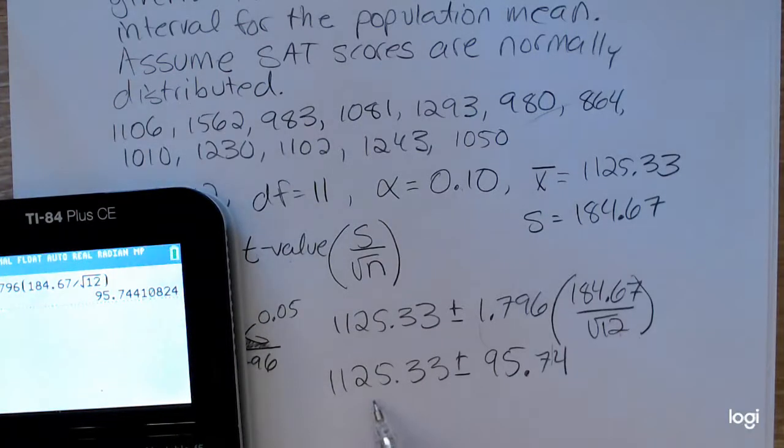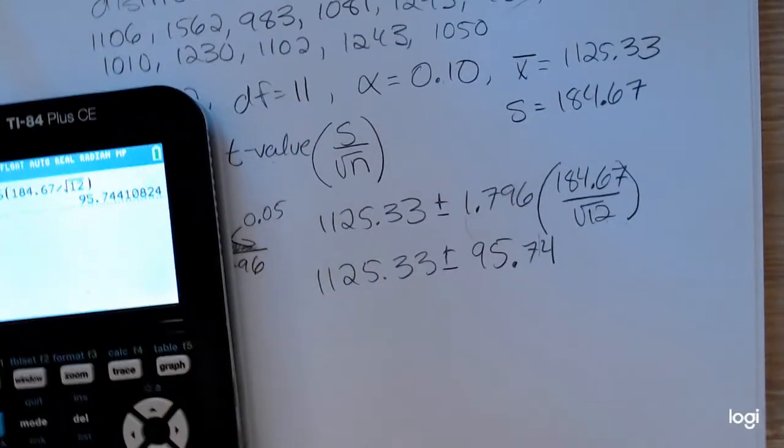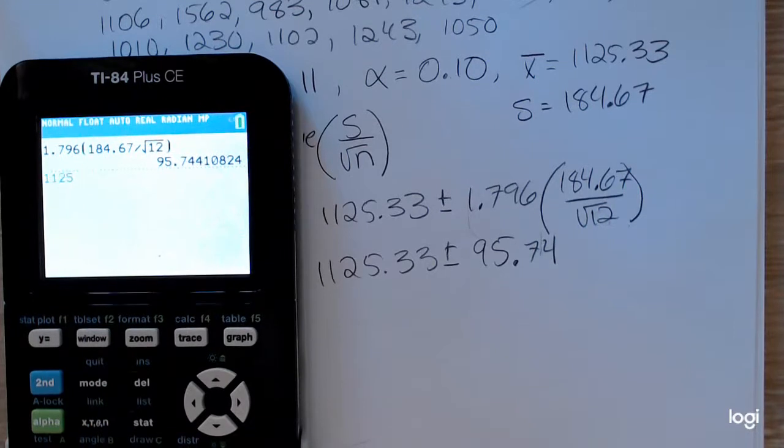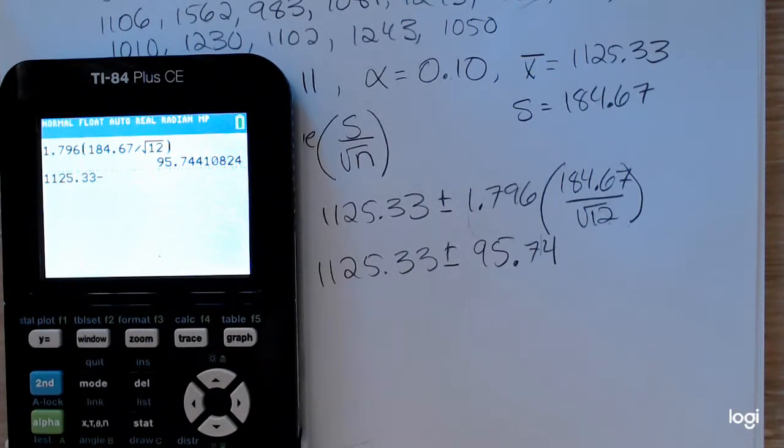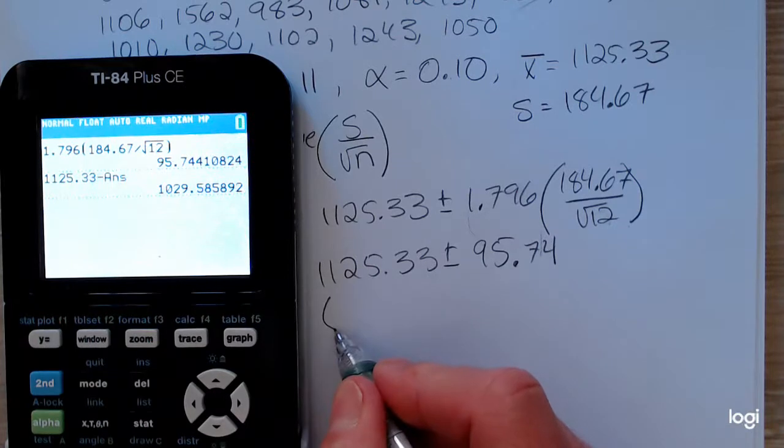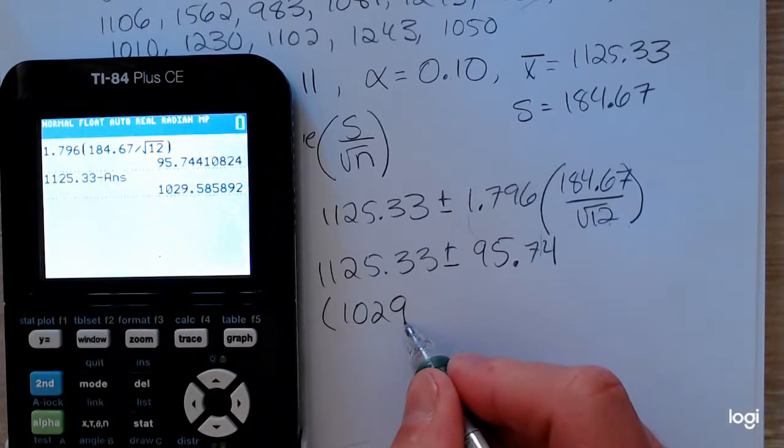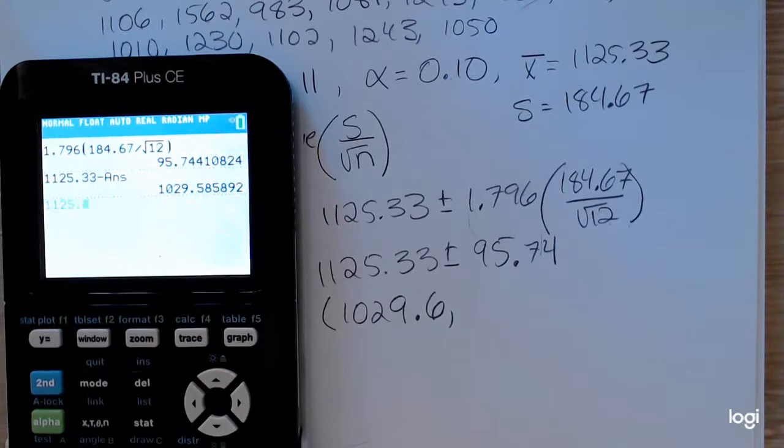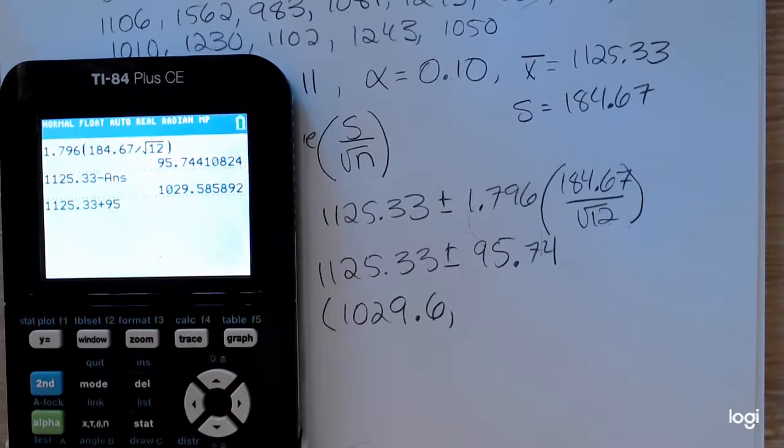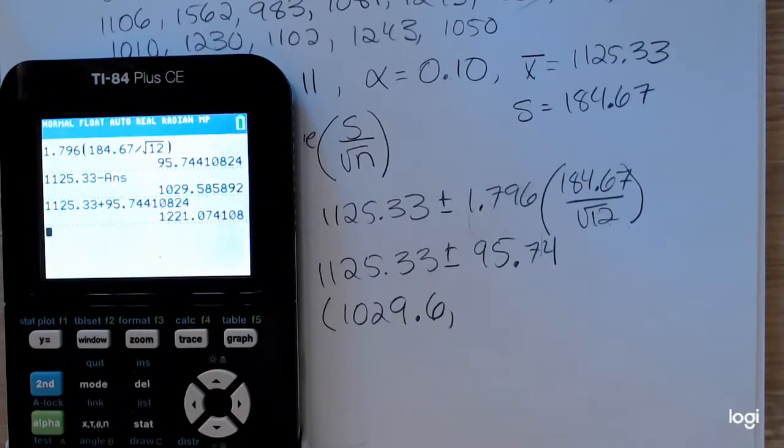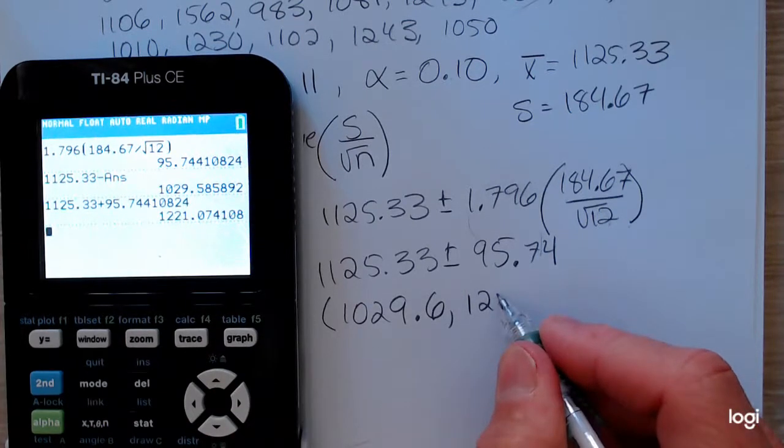So I want to take the sample mean and subtract this and add it. So subtracting it will give my lower end point for my confidence interval. So using my calculator, 1,125.33 minus, I'll just carry it down from the previous line. So the lower end point of my confidence interval will be 1,029 and I'll round to 1 decimal place, 0.6, up to 1,125.33 plus that margin of error. You can carry it out a little farther if you'd like. And rounding to one decimal place, I have 1,221.1.